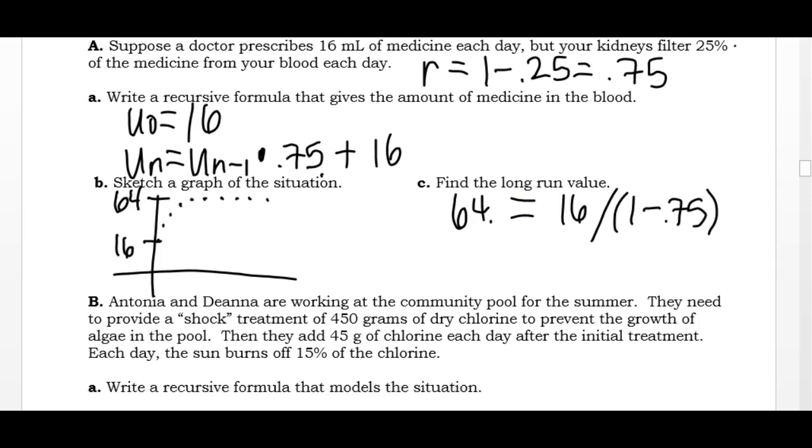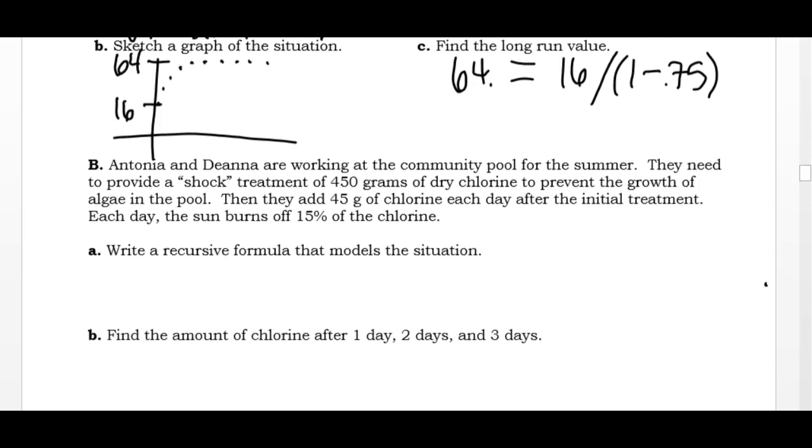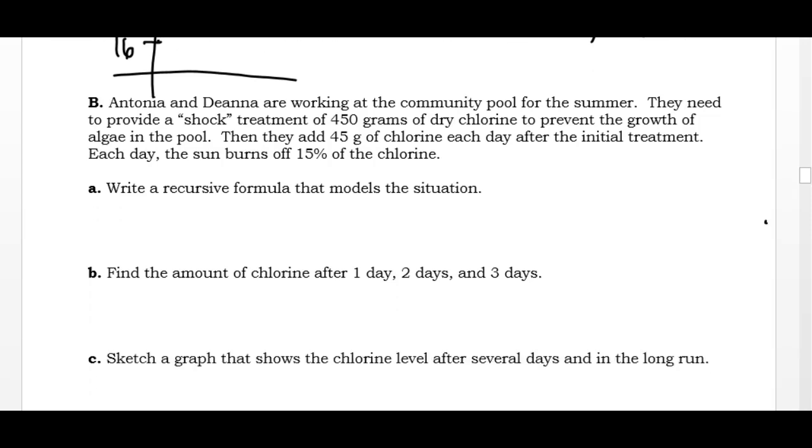I have one more example. Antonia and Deanna are working at the community pool for the summer. They provide a shock treatment of 450 grams of dry chlorine to prevent the growth of algae in the pool. Then they add 45 grams of chlorine each day after the initial treatment because the sun burns off 15% of the chlorine each day, so it evaporates.